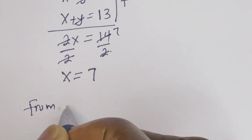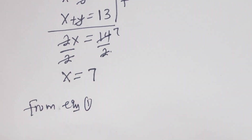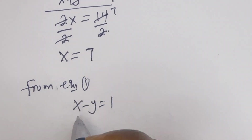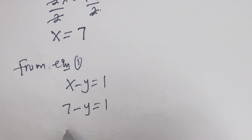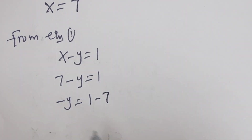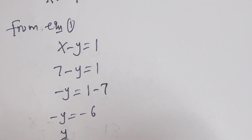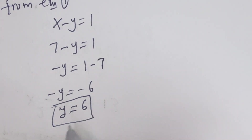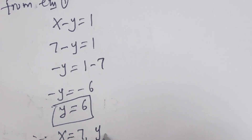From equation 1, x minus y equals 1. When x is 7, we have 7 minus y equals 1, so minus y equals 1 minus 7, which gives minus y equals negative 6, and therefore y equals 6. This is the value of y. Therefore, from the first case, x equals 7 and y equals 6.